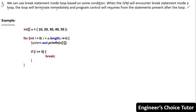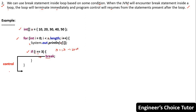When JVM encounters a break statement inside a loop, the loop will terminate immediately and the program control will resume from the statements present after the loop. Let's understand this with an example. Here we have an integer array 'a' with values 10, 20, 30, 40, 50. We are retrieving the elements of the array and printing them on the console using a for loop. We are using a break statement inside an if block. When the value of i becomes 3, the expression i==3 evaluates to true, break executes, and the control comes out from the for loop immediately.